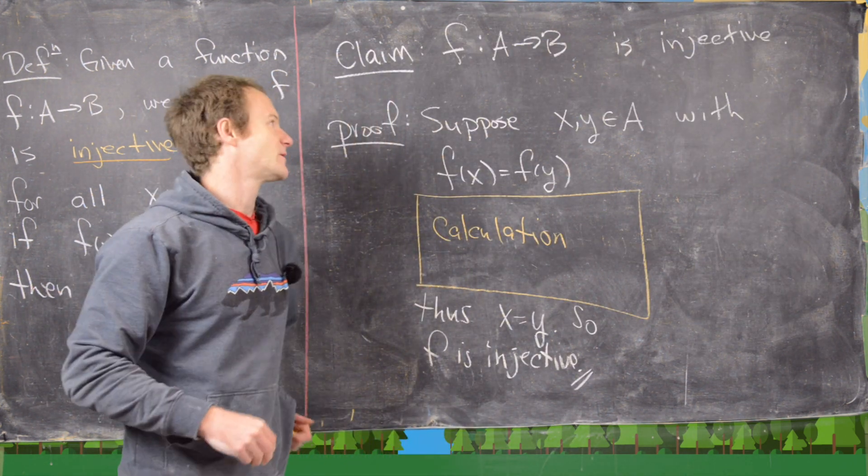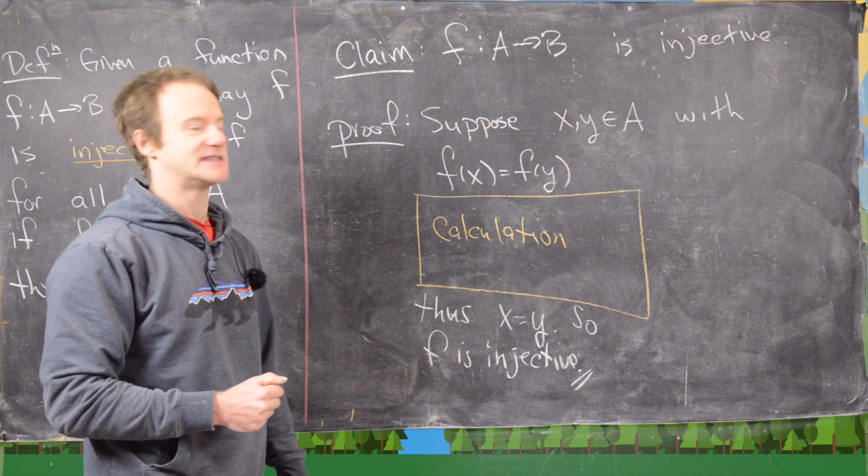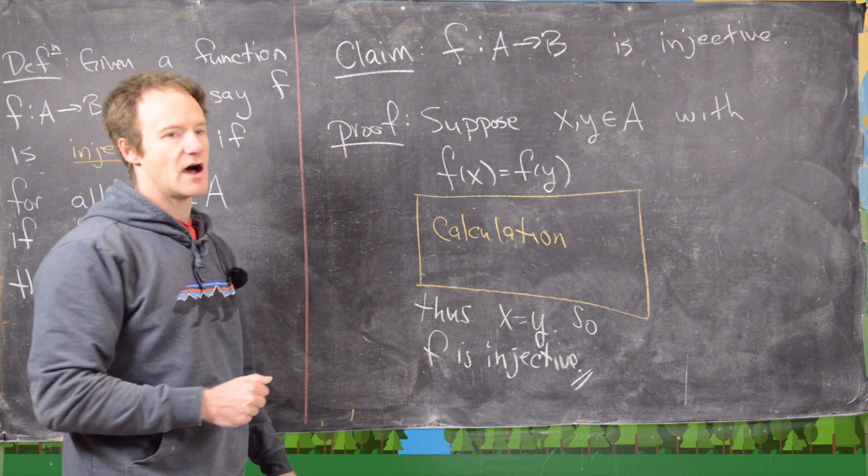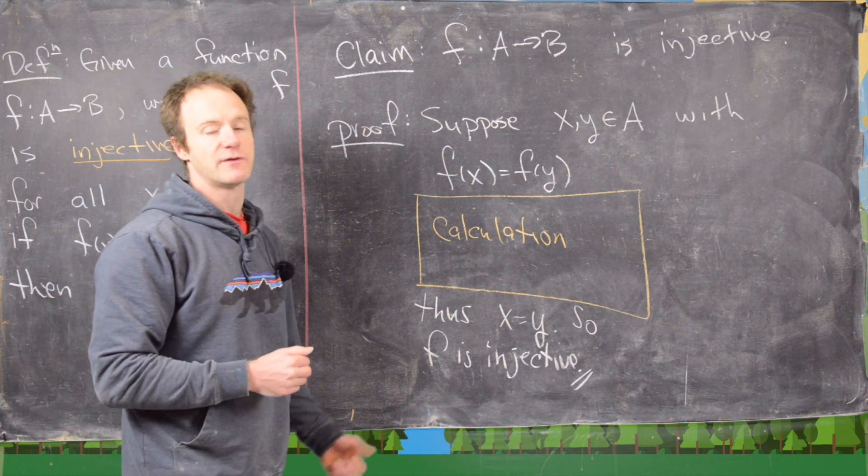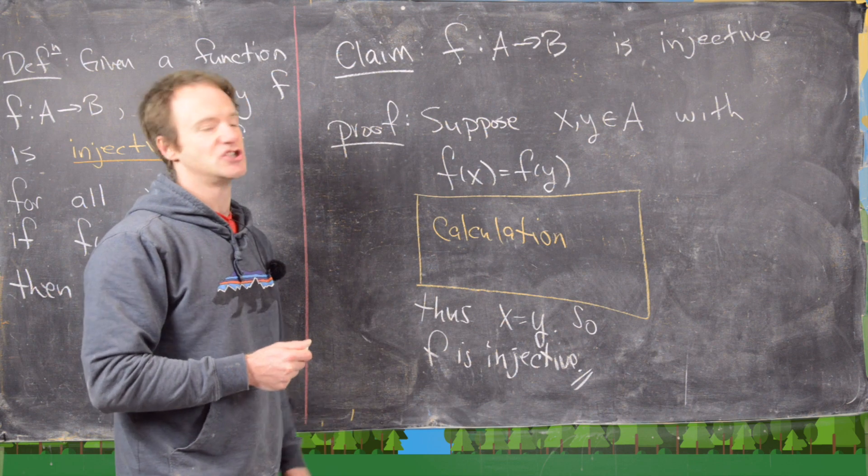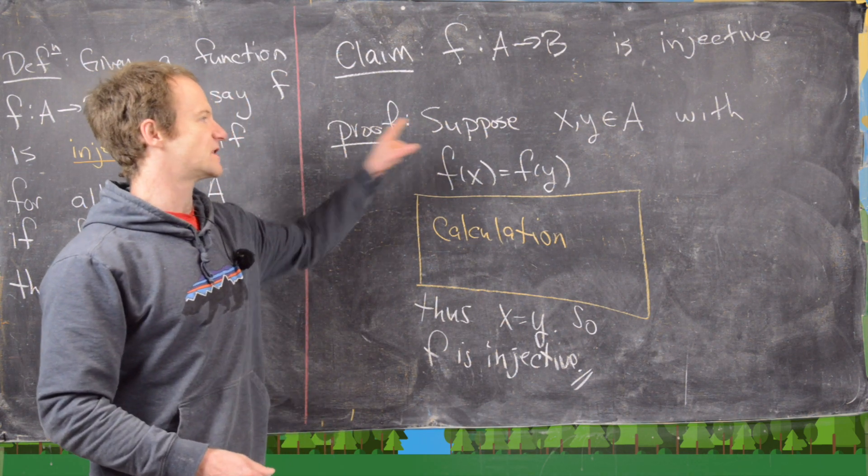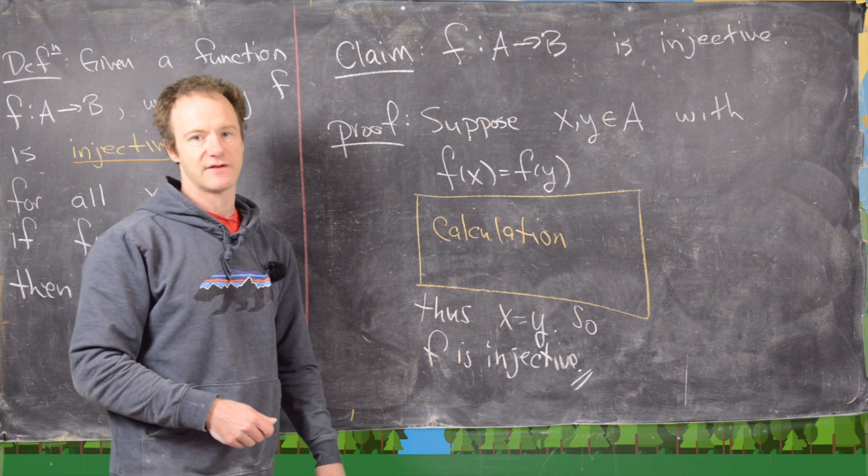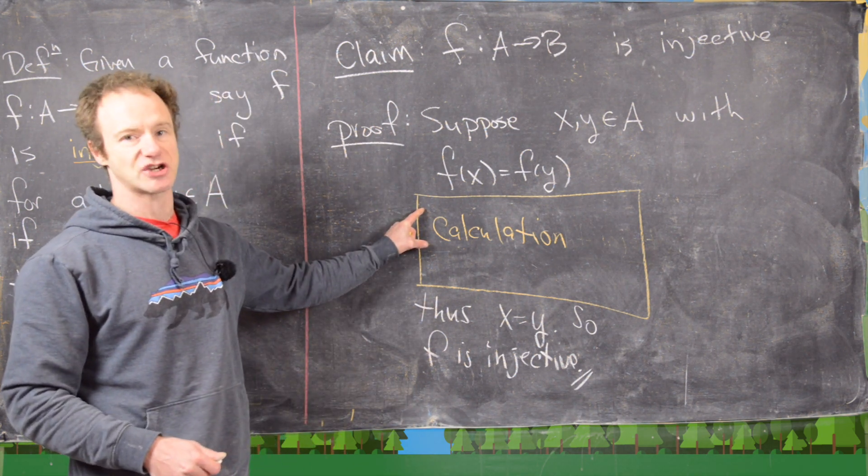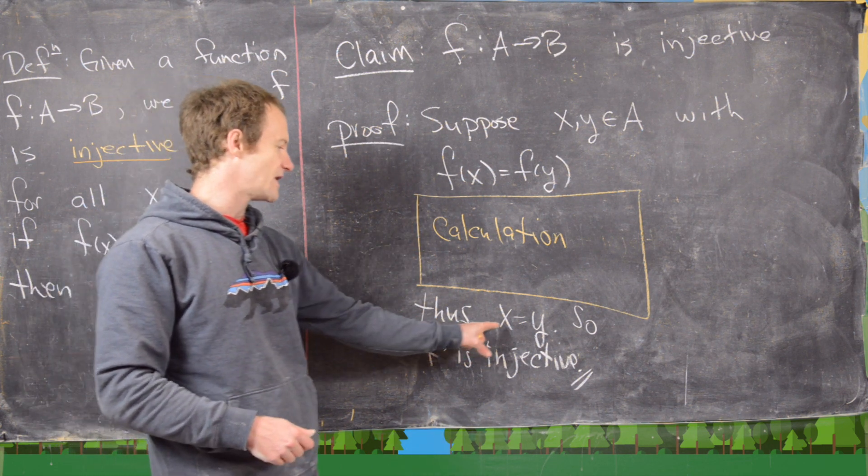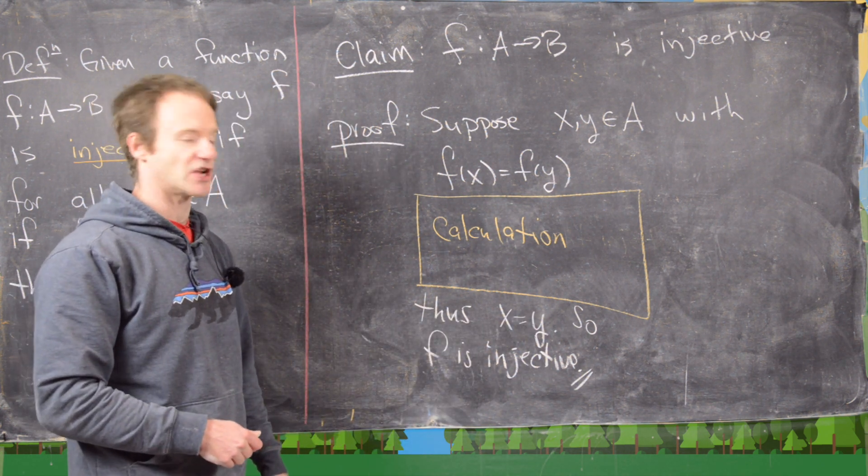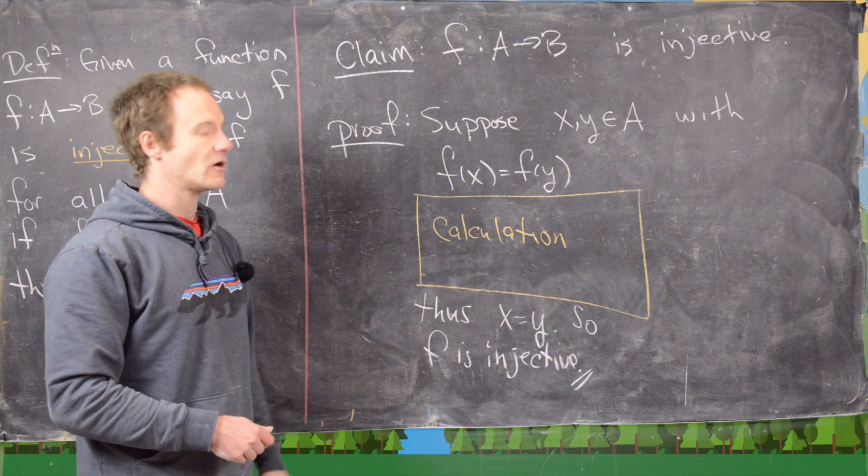Okay, before we look at some examples in detail, I want to look at the outline for showing that a function is injective. So let's say our claim is that this function f from A to B is injective. Then the outline of basically any proof that you would have to prove a function is injective looks like this. I mean, there will be some cases where it is easier to prove it another way, but this generally works. So you want to start off supposing that x and y are in A with f of x equals f of y. And then you'll take this equation, f of x equals f of y, and you'll do some calculations on this equation until you get down here to this point that x equals y. And then that tells you that f is injective. And that's all there is to it. I'll clean up the board and we'll look at some examples.